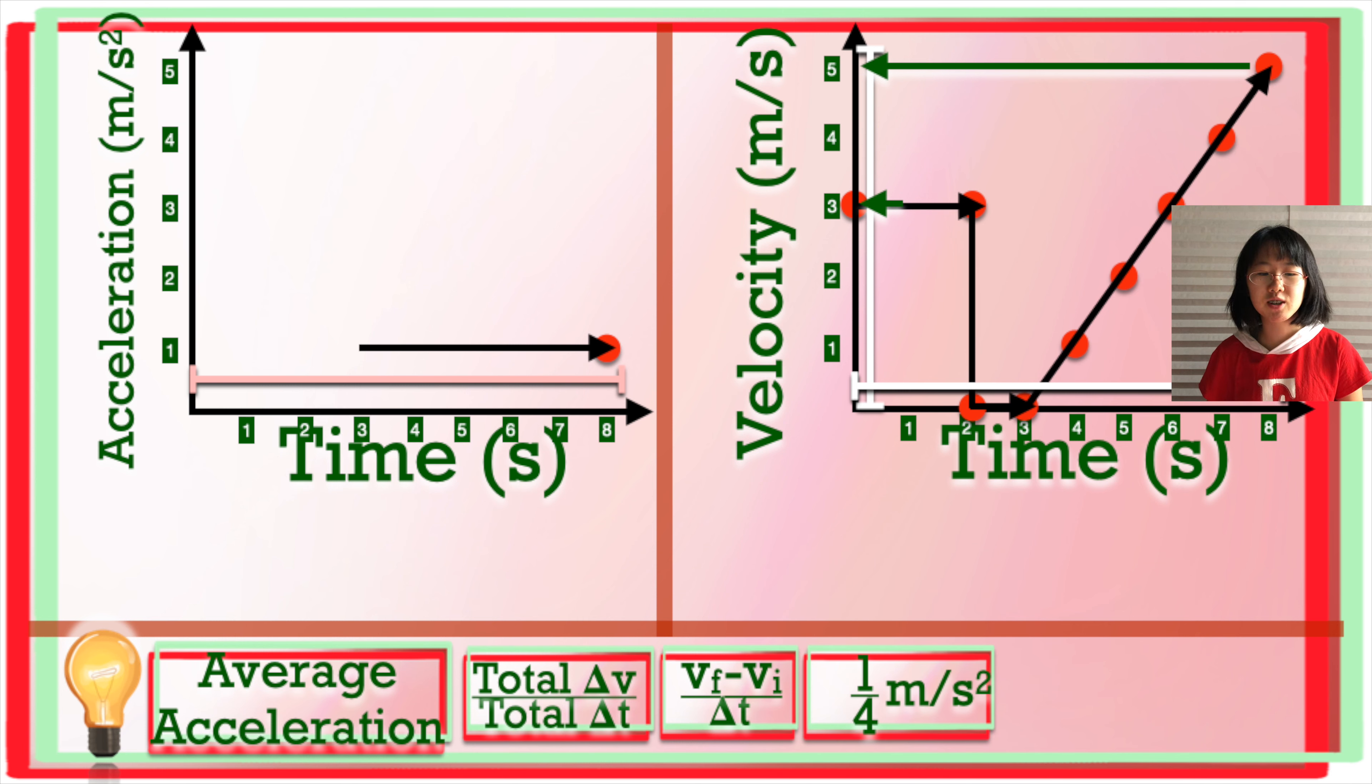If we remember the rules about significant figures, we know that the number of sig figs in our answer can only equal the number of sig figs in our least precise measurement that went into our calculation. So we have to round our answer to 1 sig fig. 1 fourth equals 0.25, which is rounded to 0.3, so our average acceleration was 0.3 meters per second squared.